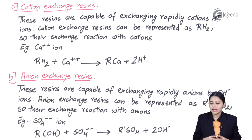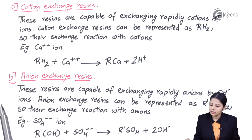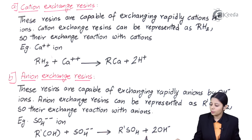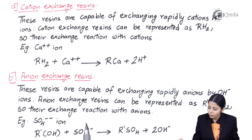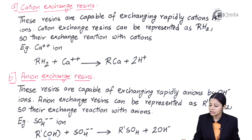Now let us go on to the anion exchange resins. Anion is nothing but a negative ion — something with a minus charge, because anions are negative ions. These resins are capable of exchanging anions by OH⁻ ions. Anion exchange resins can be represented as R'(OH)₂. Their exchange reaction with anions — for example, SO₄²⁻ — is: R'(OH)₂ + SO₄²⁻ → R'SO₄ + 2OH⁻. The SO₄²⁻ goes and sticks with R', and 2OH⁻ ions are released. Both elements and charges on the reactant and product sides are balanced.